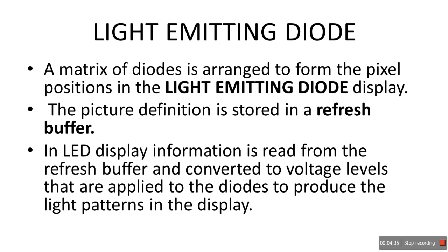Light emitting diode (LED) is the third type of emissive display. Nowadays we mostly use LED TVs — plasma panels and thin film electroluminescent displays are outdated. LED is much cheaper and gives comparatively better results. A matrix of diodes is arranged to form the pixel positions in the LED display. The picture definition is stored in a refresh buffer, just like in CRT. Information is read from the refresh buffer and converted to voltage levels that are applied to the diodes to produce the light patterns in the display.